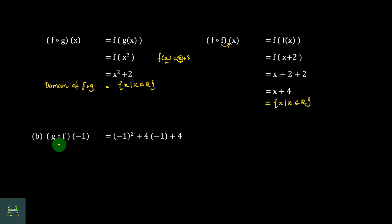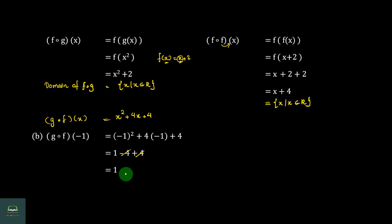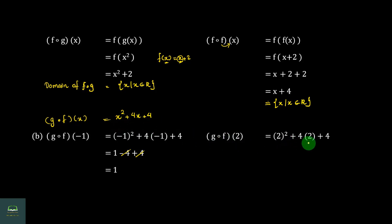For g∘f(minus 1): substitute x = minus 1. g∘f(x) = (x+2) squared. g∘f(minus 1) = (minus 1 + 2) squared = (1) squared = 1. For g∘f(2): g∘f(2) = (2+2) squared = (4) squared = 16.